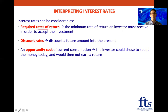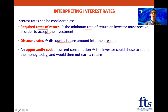Firstly, it can be a required rate of return — this is the minimum rate of return an investor must receive in order to accept the investment. Alternatively, we can look at an interest rate as a discount rate, where we discount a future amount into the present. For example, $100 in one year's time might be worth $95 today. And then we can also view an interest rate as an opportunity cost of current consumption, because if the return is 5%, then the investor would not get that 5% by spending their money today.